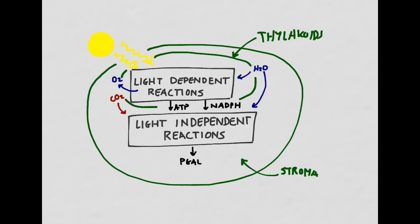Then for the light-independent reactions, which occur out in the stroma, we're going to add together carbon dioxide, ATP, and NADPH, along with some more water, in order to get PGAL, which is a precursor of glucose.